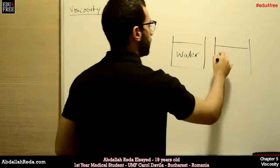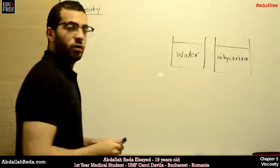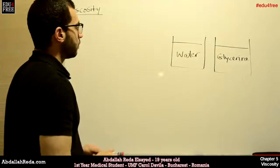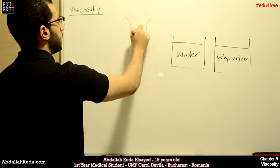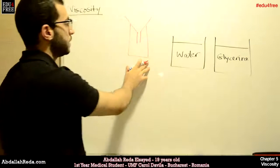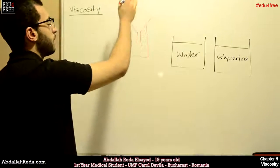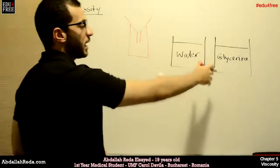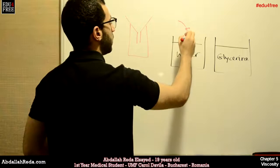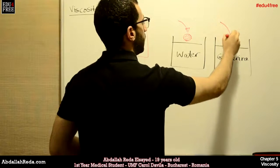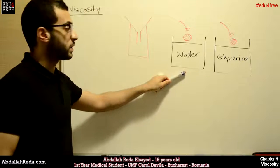The first experiment is that we will pour each liquid into a container using a funnel. We will observe that the water will pass through the funnel into the container faster than glycerin. The second experiment is that we will drop an object into both containers and see which object reaches the bottom first.